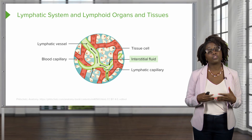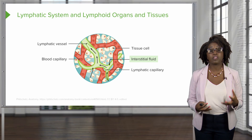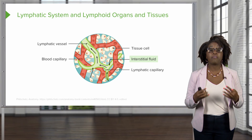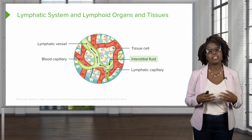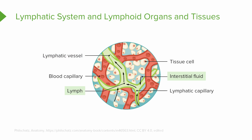Recall that interstitial fluid is that extracellular fluid formed when components of our blood plasma leak out of our blood capillaries. While some of that blood plasma is reabsorbed, the rest of it is going to drain into the lymphatic vessels. The lymphatic vessels themselves are an elaborate network of drainage vessels that circulate about three liters of interstitial fluid in a day. Once the interstitial fluid enters the lymphatics, we then refer to that fluid as the lymph.